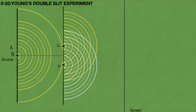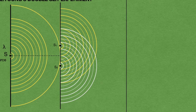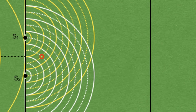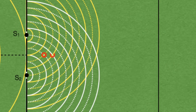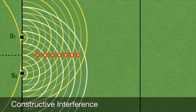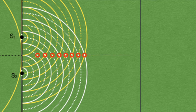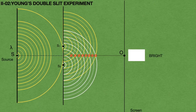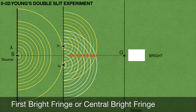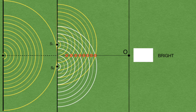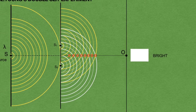Now if you look at the animation carefully — when the crest of light source S1 falls on the crest of light source S2, or trough on trough, and so on — then constructive interference is formed at that place. When the red circles are joined at these points of constructive interference, a bright fringe is formed at point O on the screen. This bright fringe is called the first bright fringe or central bright fringe.